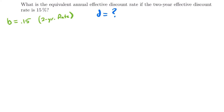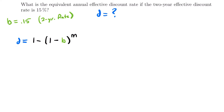The formula looks like this: D is equal to 1 minus (1 minus B) to the power of M, where M corresponds to the number of times that B is convertible per year, or compounded per year. In this case, we know that B is equal to 0.15, and we want to solve for D, but we still need to know what M is equal to.